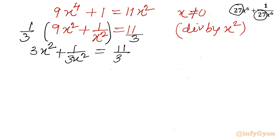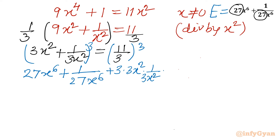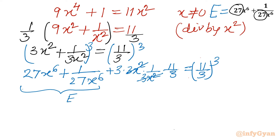Now once I take the cube of this equation, I will get my expression E. So I will consider power 3 on both sides. Using (a + b)³ = a³ + b³ + 3ab(a + b): (3x²)³ gives 27x⁶, plus 1/(27x⁶), plus 3 times 3x² times 1/(3x²) times (3x² + 1/(3x²)). The right hand side is (11/3)³. The 3x² and 1/(3x²) cancel in the middle term, giving 3 times 11/3. So E plus 3 times 11/3 equals (11/3)³.